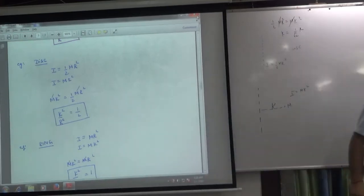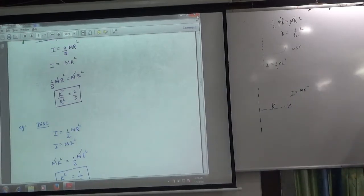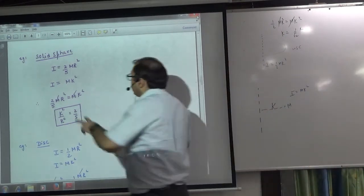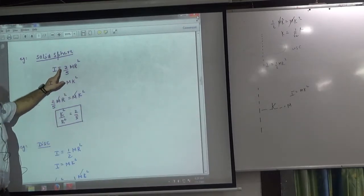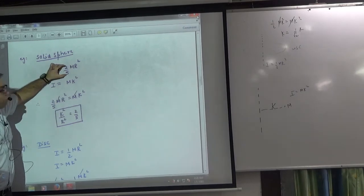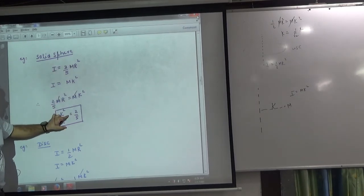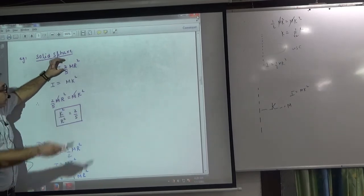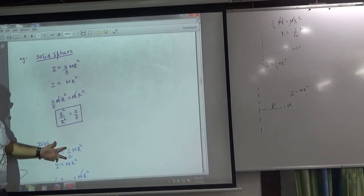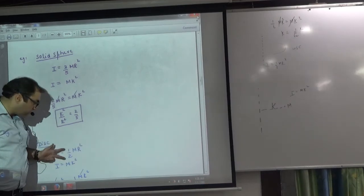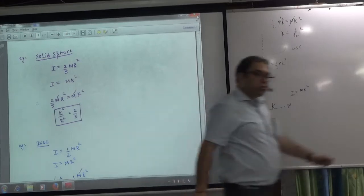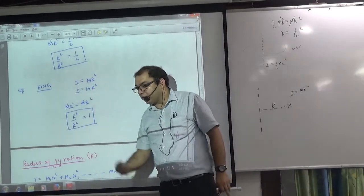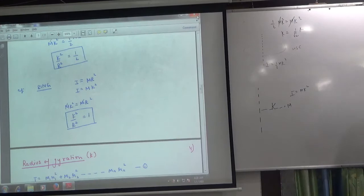Today, if I ask any question about k²/r² ratio, then what should you do? Do not equate these two. I am going to give a shortcut. If any body's moment of inertia is 2/5 MR², do not equate. Whatever MR² coefficient is, that is k²/r². Like the sphere moment of inertia, 2/5 MR². Then k²/r² ratio is 2/5. What is disc? 1/2 MR². So k²/r² what will happen? 1/2.